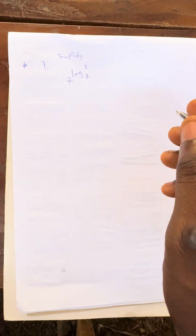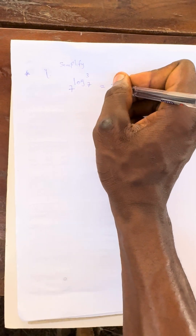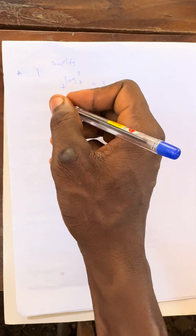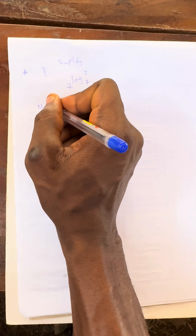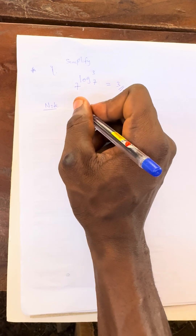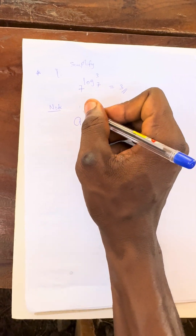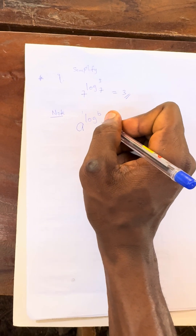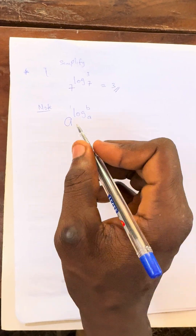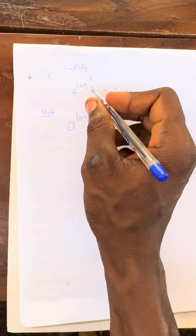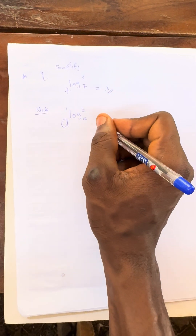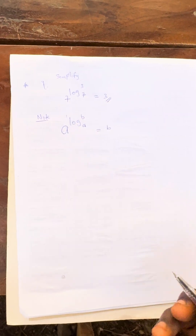How will you simplify this? The answer to this question is equal to 3. You just have to note the law that says if you have a raised to the power of log b base a — you observe that the base a and the outer number are the same — your answer will just be b.